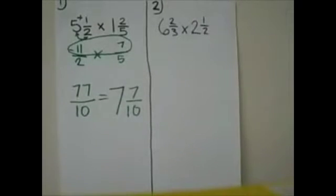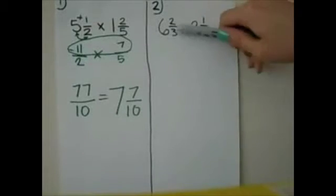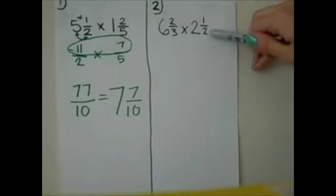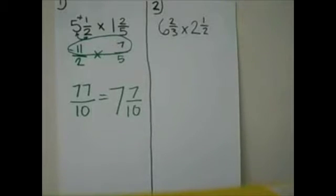Okay, let's do the second problem now, which is 6 and 2 thirds times 2 and 1 half. Now remember what's the first step we have to do, because we can't multiply these like this.